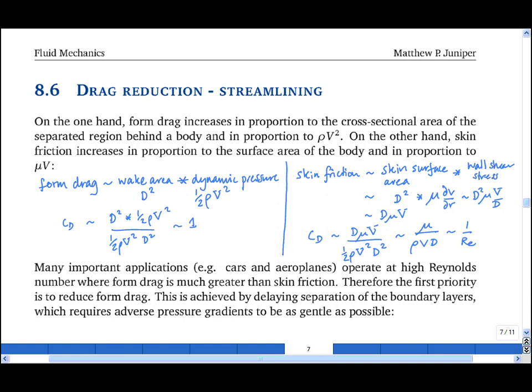So if all the drag were due to skin friction, we would expect the drag coefficient to scale with 1 upon the Reynolds number, which is what we saw for a sphere, where it was 24 divided by the Reynolds number. Remember, in a scaling argument, the absolute number is not particularly important. What's important is how that number scales with other numbers, such as the Reynolds number.